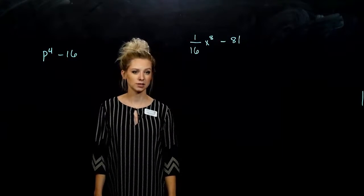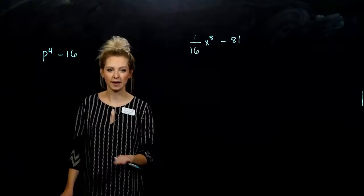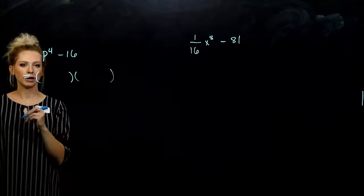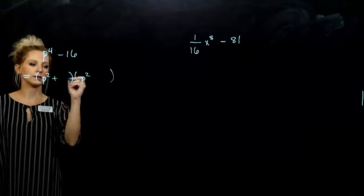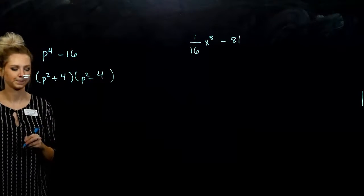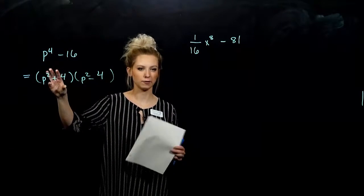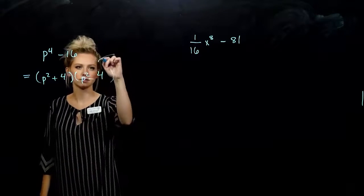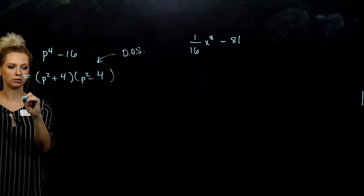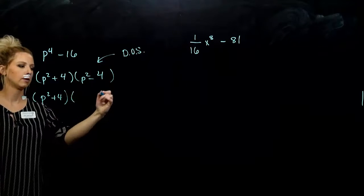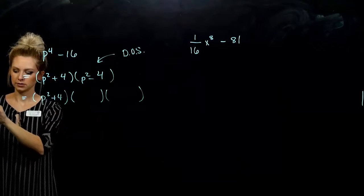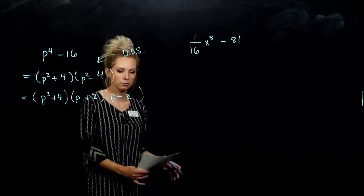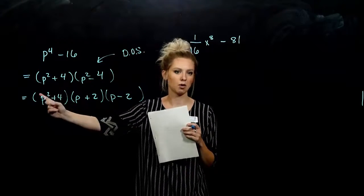The last two examples are special cases where we have to keep going until we factor down as far as we can. Looking at the first one — I've got a difference of perfect squares, so I break it down into two binomials with the first term being p squared, plus and minus, and the square root of the last term is 4. But can we go any farther? A sum of squares can never be broken down further. However, the second factor is another difference of squares, so we keep going. P squared plus 4 never breaks down, but the difference of squares factors as: square root of p squared is p, alternating signs, square root of 4 is 2. And we keep asking — everything is as far as it can go.